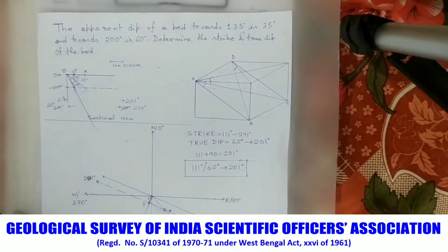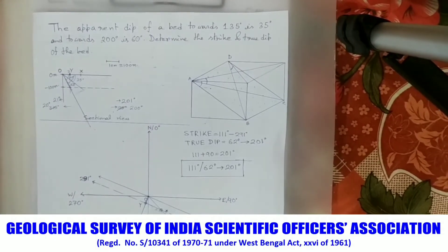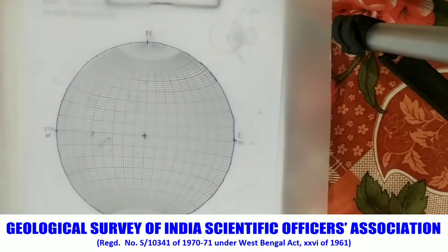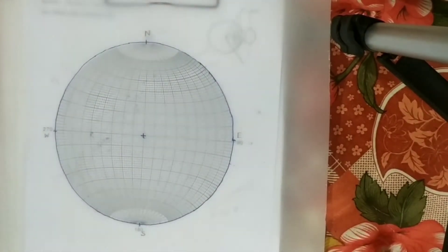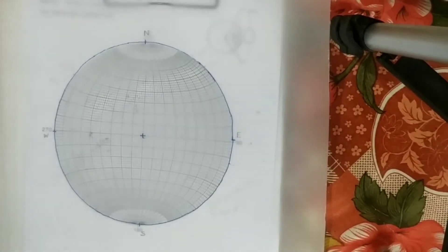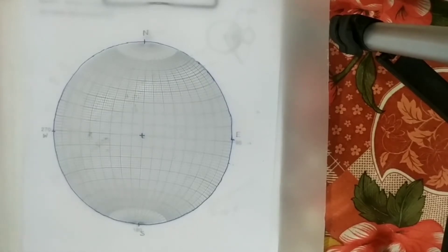when solving for true dip using a stereonet when two apparent dips are given. You can see the detailed graphical method in our earlier video. The basic concept is the same, but for stereonet the procedure will be different while the basic theory remains the same.